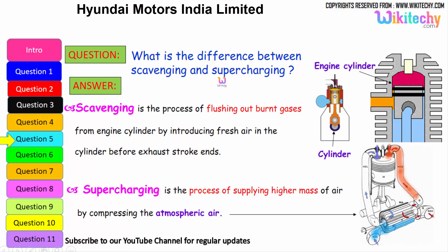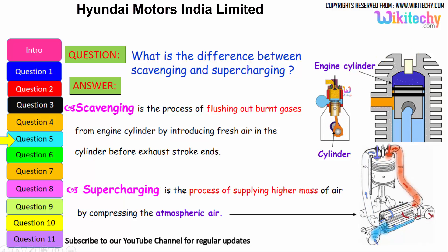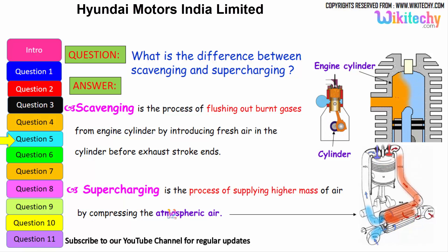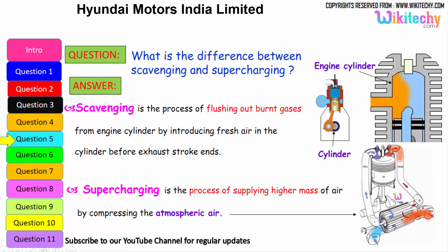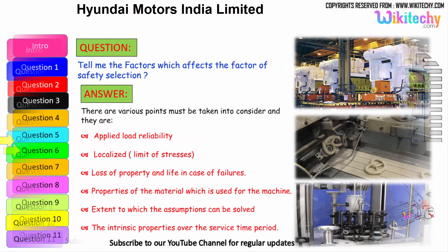What is the difference between scavenging and supercharging? Scavenging is the process of flushing out the burnt gases from the engine cylinder by introducing fresh air in the cylinder before the exhaust stroke ends. Supercharging is the process of supplying higher masses of air by compressing it above atmospheric pressure — a high pressure of air is injected into the cylinder to compress the atmospheric air.